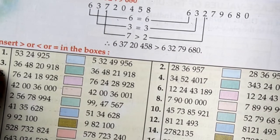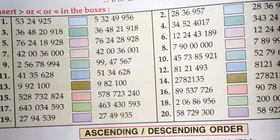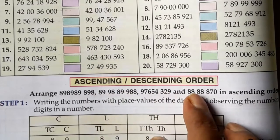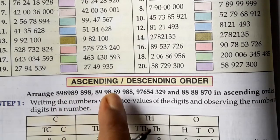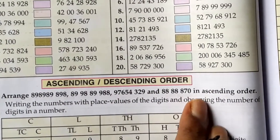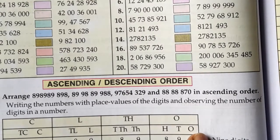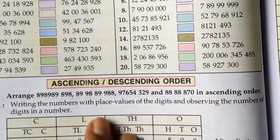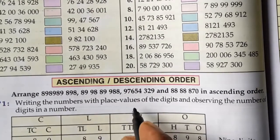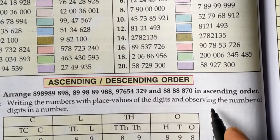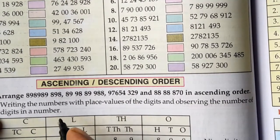Problems 1 and 3 are done; you have to do the rest. Now we will do ascending and descending order. Arrange these numbers — 4 numbers are given — in ascending order. Ascending means arranging from the smallest to the largest number. Step 1: write the numbers with place values and observe the number of digits in each number.